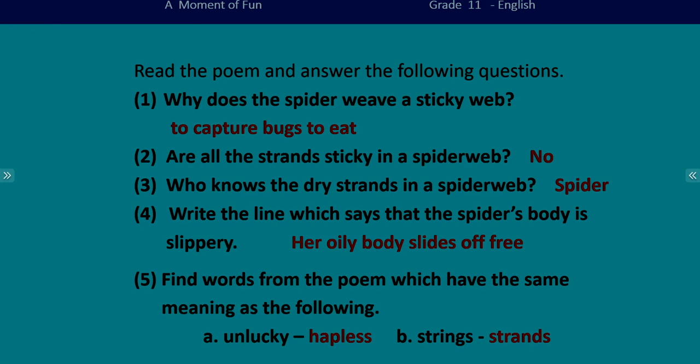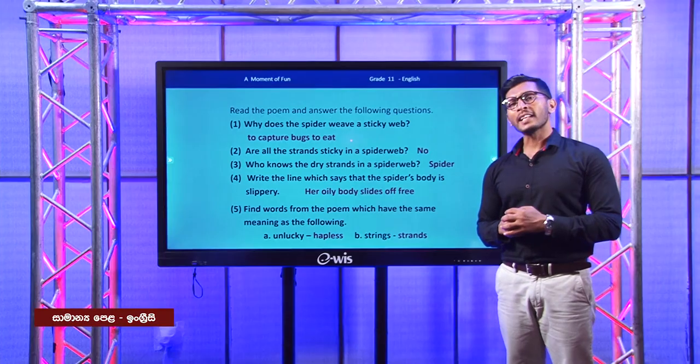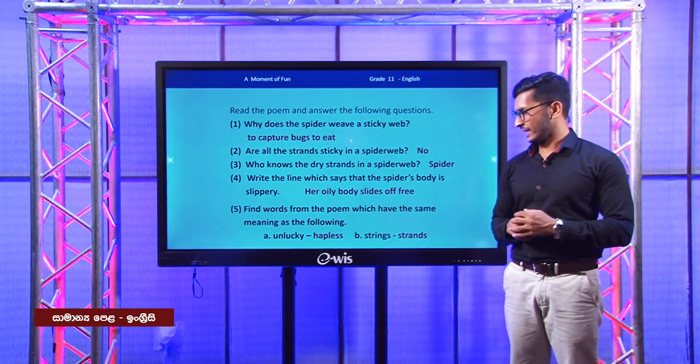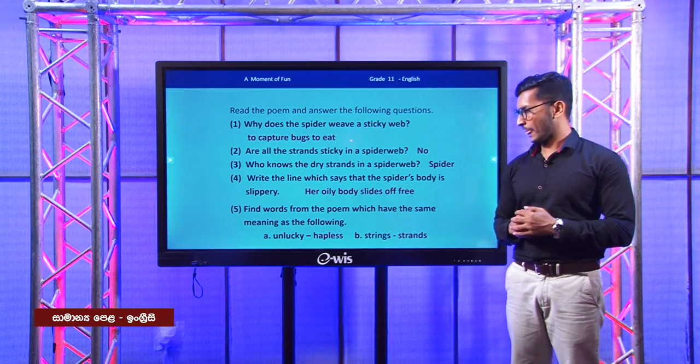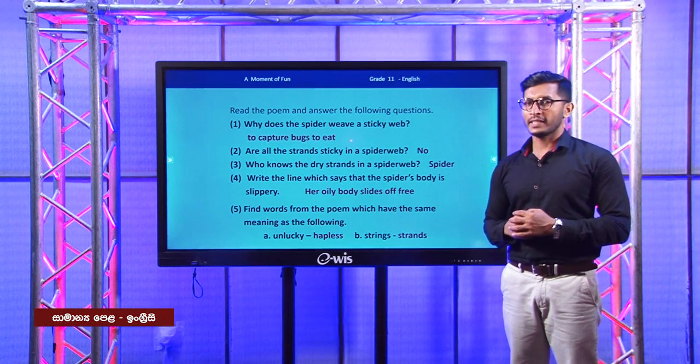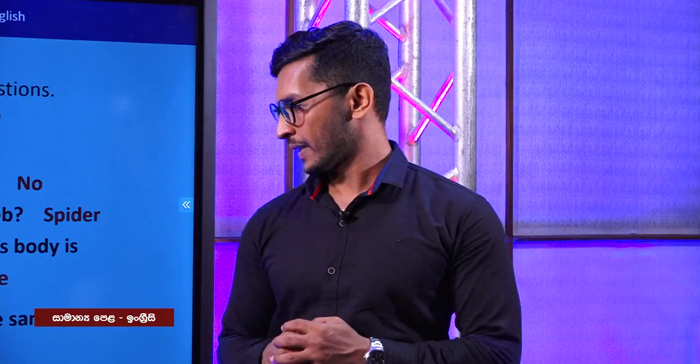Let's see the last question: find words from the poem which have the same meaning as the following. The first one — unlucky. Who is unlucky to get caught? The fly is unlucky. What is the adjective used to describe the fly? It is 'hapless.' And you all know the meaning of the word 'strings' — strings are strands.